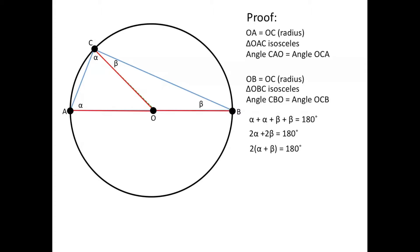And simplify that further by factoring out the 2, and that will give you 2 times alpha plus beta equals 180 degrees. And if you divide both sides by 2, you'll end up with alpha plus beta is 90 degrees.